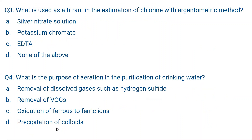Question number three: What is used as a titrant in the estimation of chlorine with the Argentometric method? Argentometric method itself means silver. In this titration, silver nitrate solution is the titrant and potassium dichromate is the indicator. EDTA is not used. The correct answer is A: silver nitrate solution.